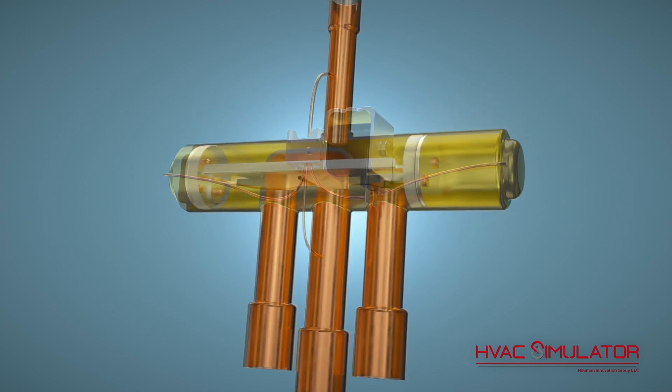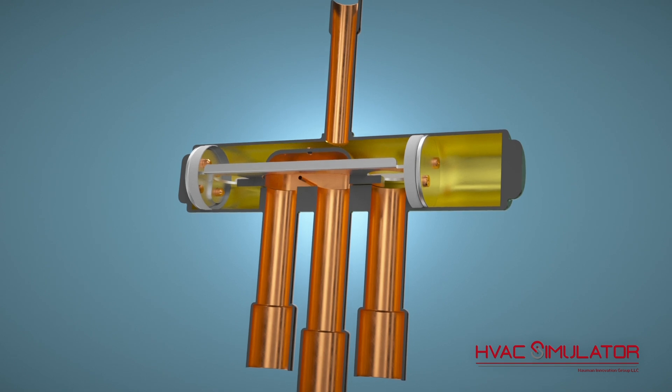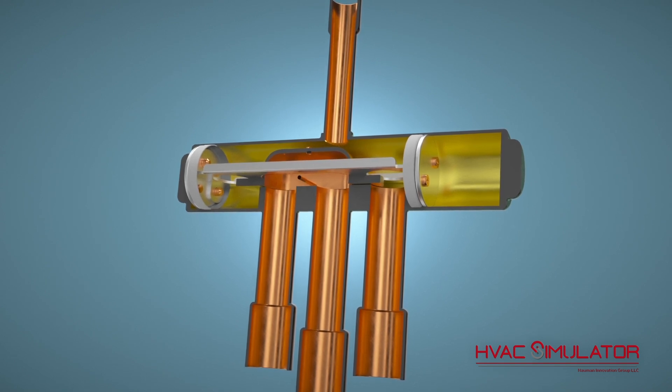First, examine how the refrigerant flows through a reversing valve with a de-energized solenoid coil. In this example, a de-energized solenoid coil represents heating.